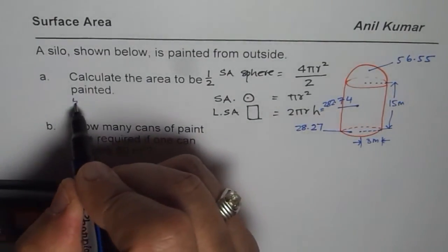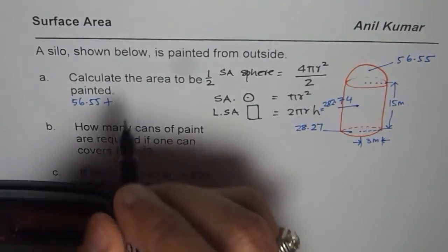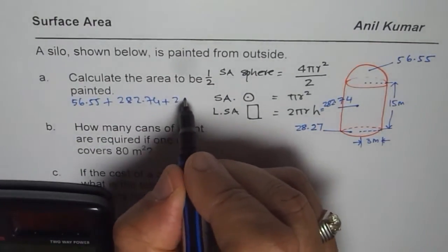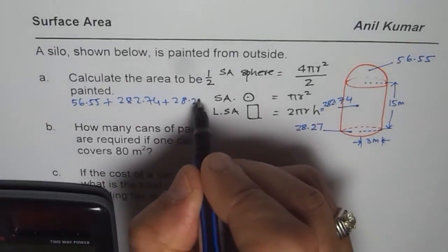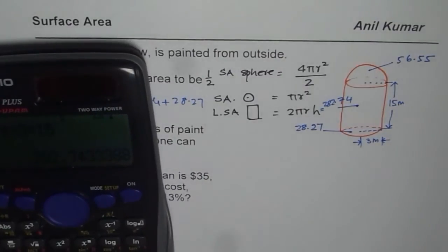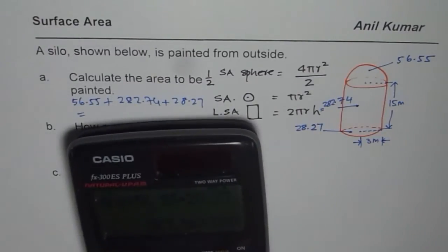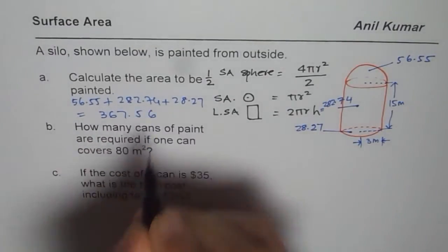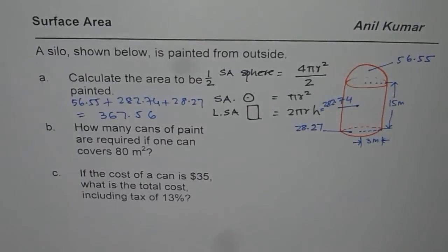Adding all these values we get the total area: 56.55 plus 282.74 plus 28.27. Let's add them up. That gives us 367.56 meters square.